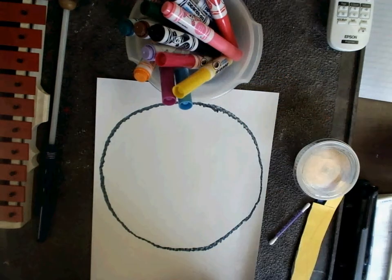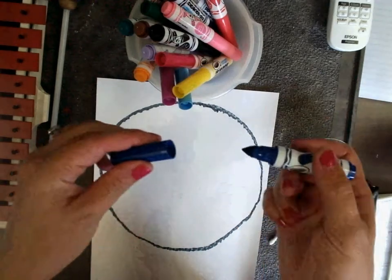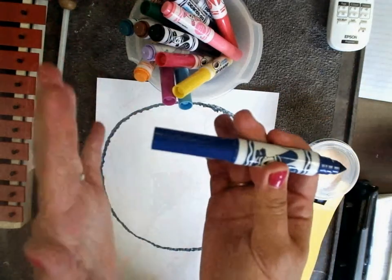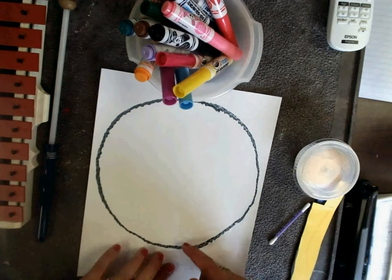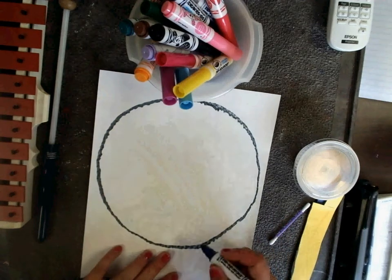I start with my marker, I take off the cap, I put it on the back so I don't lose it. Somewhere on the edge of the circle, you'll write your name.